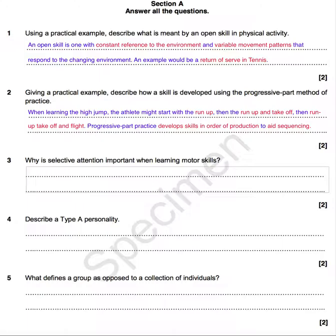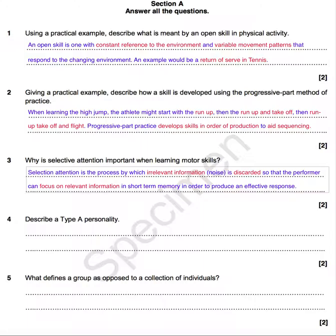These are all straightforward questions, but people often only mention one thing on the mark scheme instead of two. Why is selective attention important when learning motor skills? Selective attention is the process by which irrelevant information — sometimes known as noise — is discarded so that the performer can focus on relevant information in their short-term memory in order to produce an effective response. No practical example is required, but you could also say this enables the performer to perceive the situation and make an effective decision.